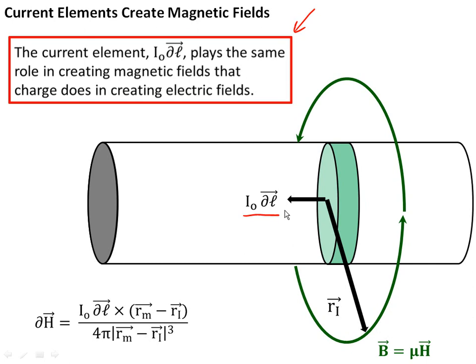The amount of the current times the length, and there's essentially a very small vector, DL, that points in the direction that's moving. That this current element plays exactly the same role in creating a magnetic field that the charge does in creating electric fields. Remember, charges generated electric fields? It turns out that current elements, very tiny little pieces of current moving in a particular direction, are the things that generate magnetic fields.